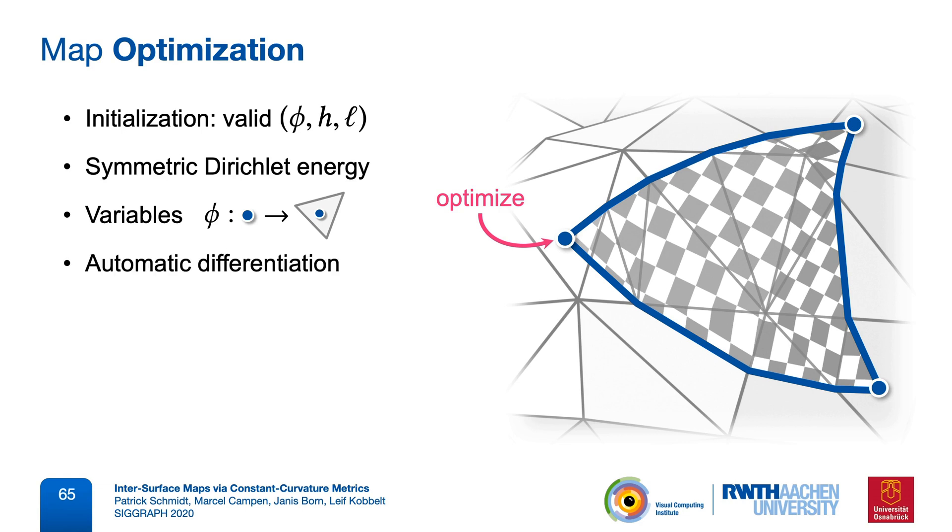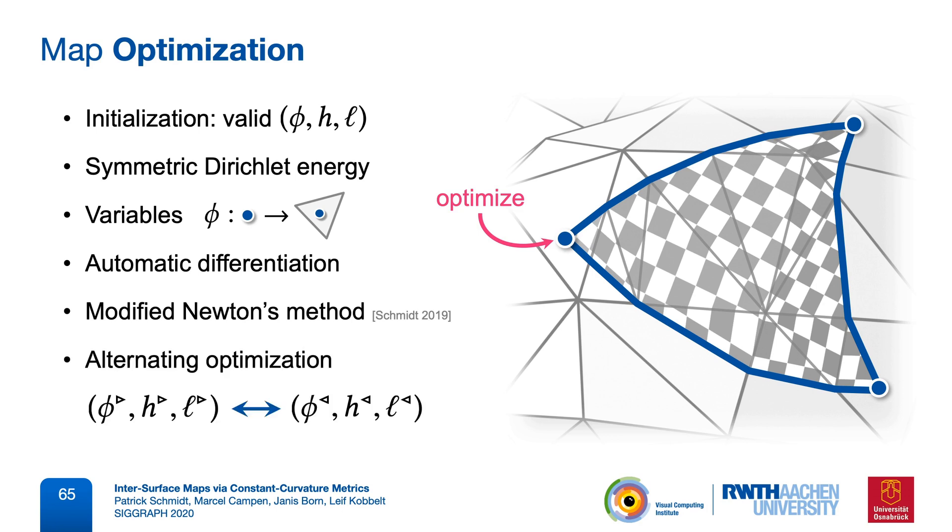However, every time we need to evaluate the objective function at a new point in solution space, we have to apply the map completion operator. Besides optimizing mapped vertices only, the shape of edge images can also be improved by including the underlying metric in the optimization. And luckily this is possible without making it any more complicated by simply alternating the direction in which we represent our map. Because changing the mapped vertex positions in one direction implicitly changes the metric of the reverse direction, and also the other way around. We elaborate a lot more on this in the paper.